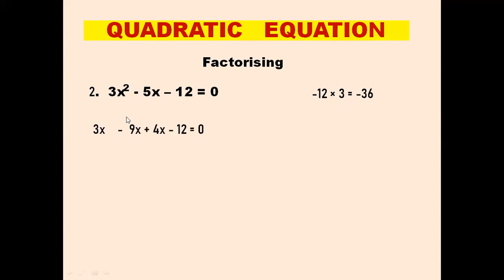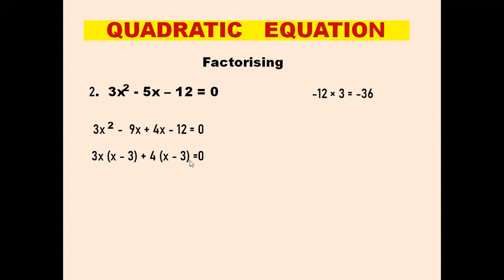Now let's solve. We write 3x² as it is. We write minus 9x plus 4x, because we need a minus sign for the middle term — if we wrote plus 9x minus 4x we would not get the minus sign. So minus 9x plus 4x, and since minus 9 times 4 gives minus 36, this is correct. Then minus 12 stays as it is. Now we take 3x common from the first two terms, leaving x minus 3, and take 4 common from the last two terms, leaving x minus 3 equals to 0.